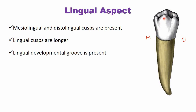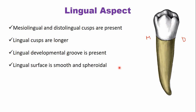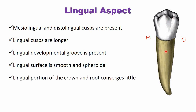In between the mesolingual and distolingual cusps, there is a groove known as the lingual developmental groove. Otherwise, the lingual surface is smooth and spheroidal. Compared to teeth anterior to the second premolar, there is convergence on the lingual side, but in the case of the mandibular second premolar, there is little convergence compared to those anterior teeth.